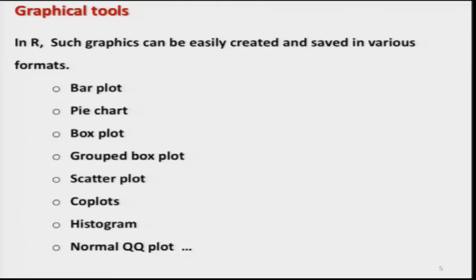In R there is a long list of graphics that can be created: bar plot, pie chart, box plot, group box plot, scatter plot, co-plots, histogram, normal QQ plot, and many more — two-dimension, three-dimension, colored, and many possibilities. It simply depends on your capability how many graphics you can learn. I am going to explain some selected types here. My idea is to show you how to create graphics in R software, what different options are available, and give you several examples so that you will be confident enough to learn any other graphics according to your need.